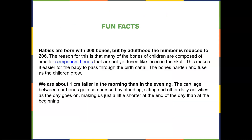Babies are born with 300 bones, but by adulthood the number is reduced to 206 — great quiz question. The reason for this is that many of the bones of children are composed of smaller component bones that are not yet fused, like those in the skull. This makes it easier for the baby to pass through the birth canal. The bones harden and fuse as children grow, and that can vary from child to child — it can be five years, it can be six, it just depends.